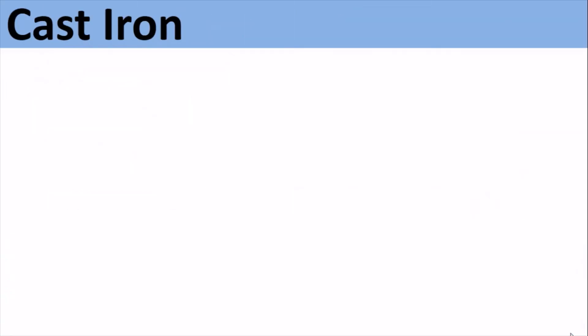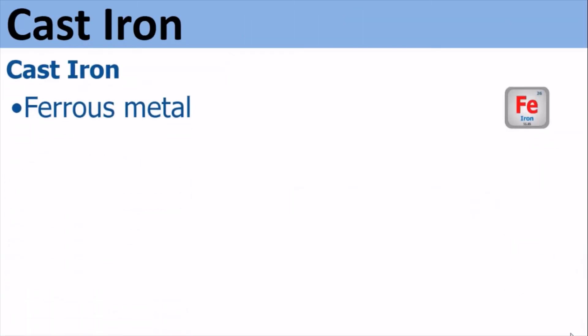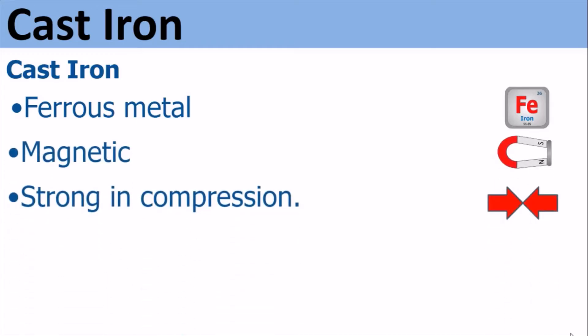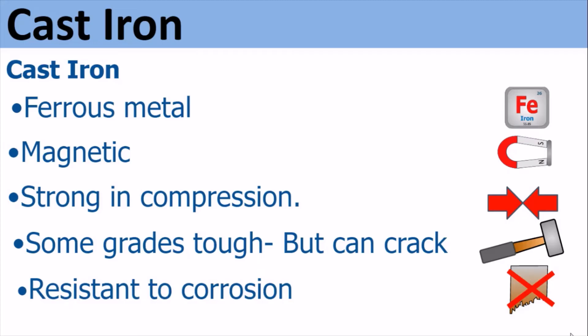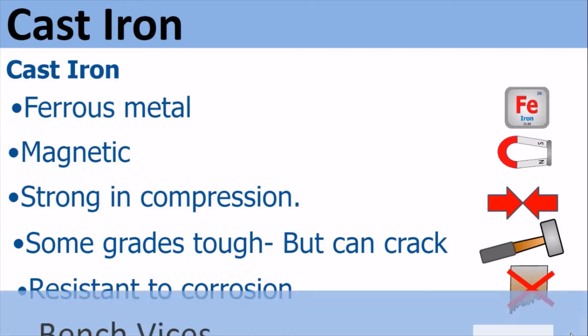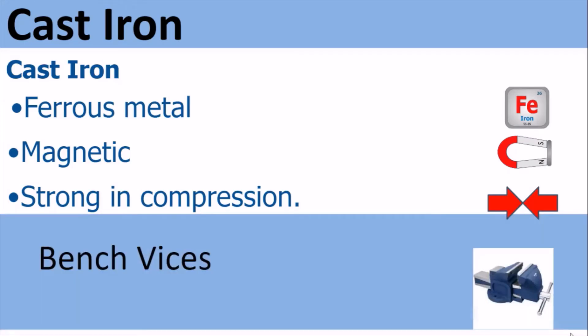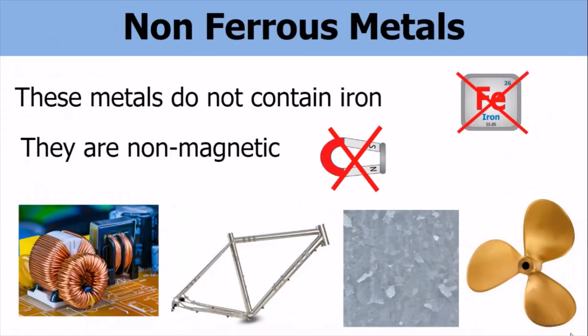Cast iron. Cast iron is a ferrous metal — it contains iron and is magnetic. It is strong in compression. Some grades are tough, but it will crack if subjected to certain loads. It is resistant to corrosion. You can see there a bench vise which is made from cast iron.